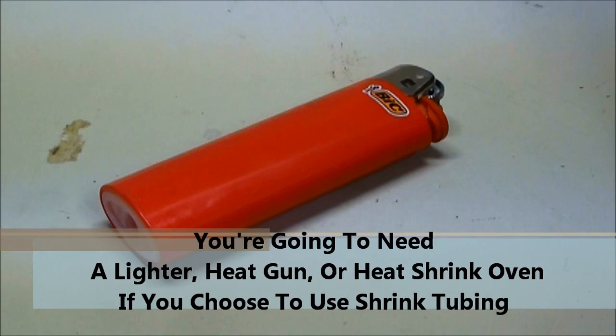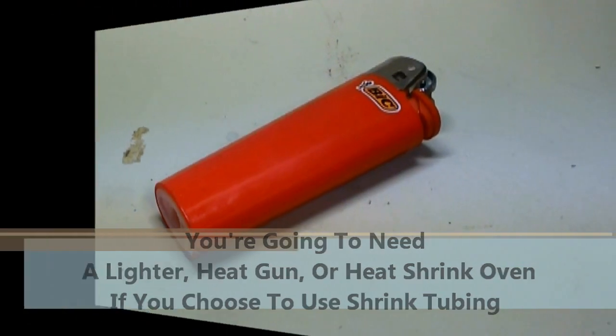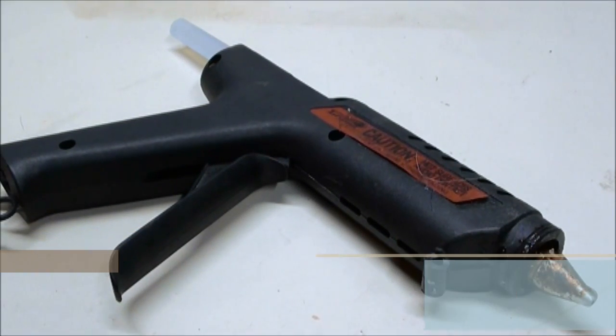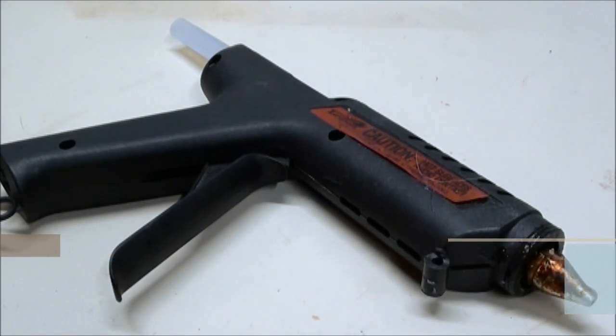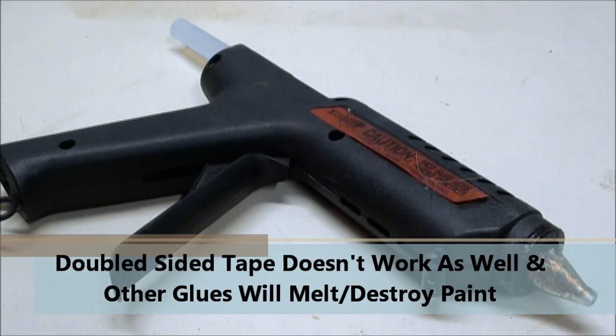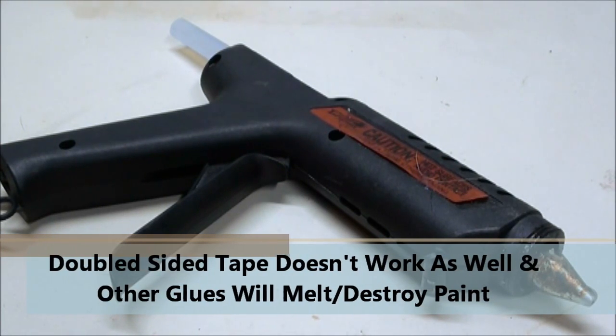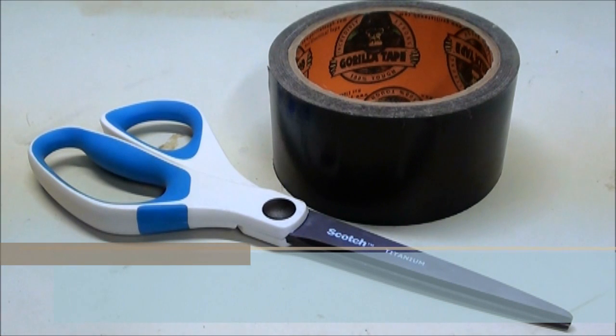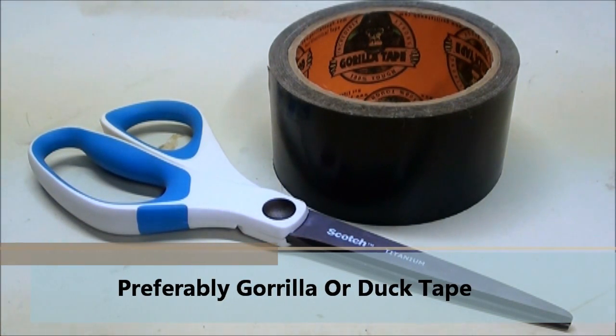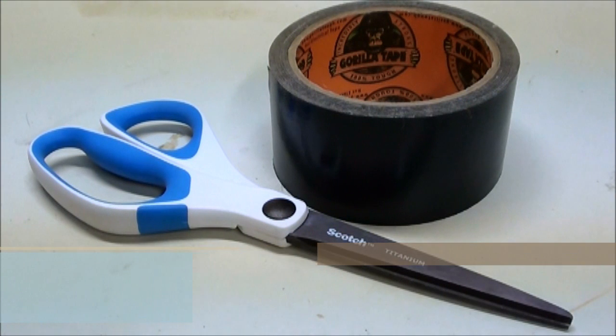You're also going to need a lighter, but only if you're using the shrink tubing. You're also going to need a hot glue gun in order to install the battery pack to the inside of the RC body. You could use industrial strength double side tape, but I've had better results with this. And finally, a little gorilla tape to use inside of the RC body to tape the wires down. You could also use duct tape.